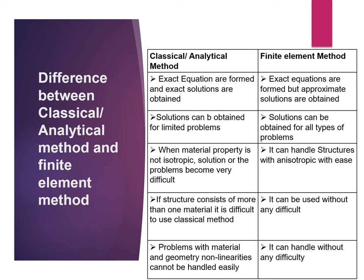In the classical method, when material property is not isotropic, problems become very difficult, while in FEM it can handle anisotropic structures with ease. In the classical method, if a structure consists of more than one material, it is difficult to use the classical method; in FEM it can be used without any difficulty. Problems with material and geometry non-linearities cannot be handled easily in the classical method, while in FEM they can be handled without any difficulty.